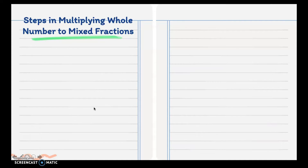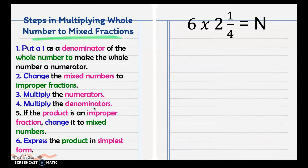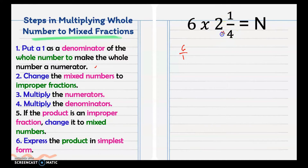Next: steps in multiplying a whole number by a mixed fraction. First, put 1 as the denominator of the whole number to make it a fraction. In the example, our given is 6, so we just put 1 as the denominator. Then change the mixed number to an improper fraction by multiplying the denominator and the whole number and adding it to the numerator. So 4 times 2 is 8, plus 1 is 9, then copy the denominator. Then multiply the numerators: 6 times 9 is 54.